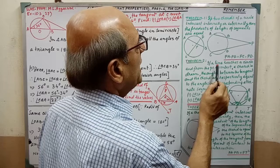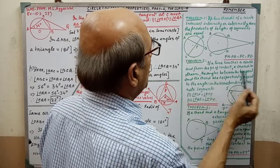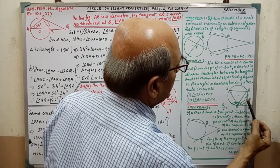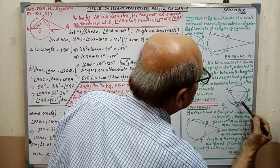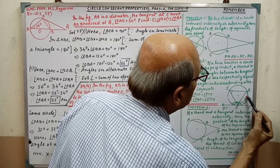Theorem 2: if a line touches a circle and from the point of contact a cord is drawn, this is the tangent and this is the cord. In this case, the angle, this angle is equal to this angle, alternate segment, and this angle equal to this.